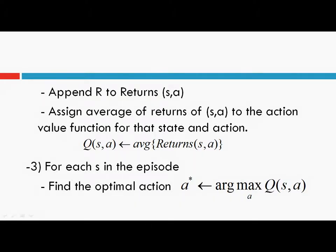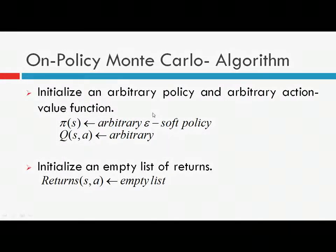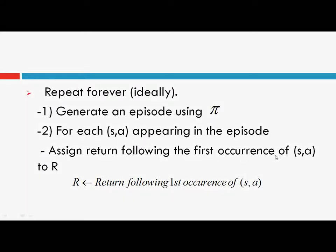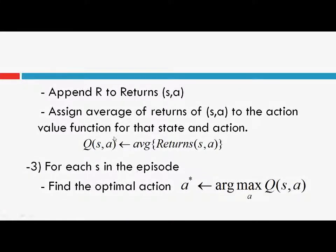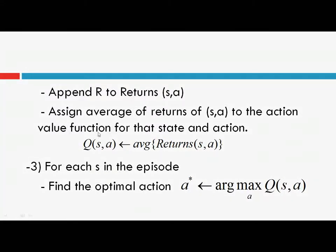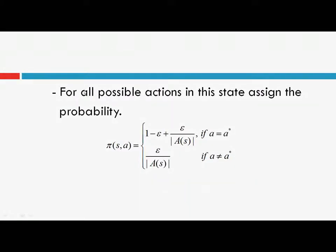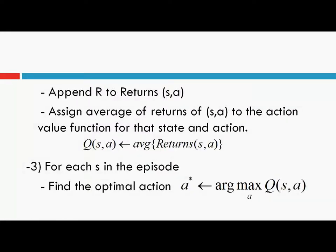We do this for each state s2, s3, s4 and every state in the episode. Here is the complete algorithm: first is the initialization step. Second, we loop and generate an episode. We perform an evaluation step — assign the return following the first occurrence of a state-action pair to R, append it to the list of returns for that state-action pair, and assign the average of returns to the action value function. Then for each state in the episode we find the optimal action and assign probabilities. This is the complete on-policy Monte Carlo algorithm.